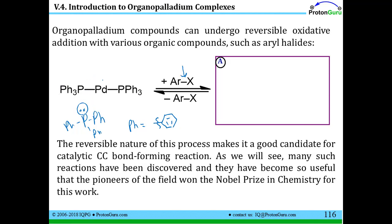Similarly to magnesium, the palladium is going to insert into the aryl-halogen bond, kind of like when you're making a Grignard reagent. The result is that the palladium has not only the neutral phosphine ligands but also an aryl and an X ligand. The aryl and the X are both considered negative-1 ligands, so the palladium which was zero oxidation state to start is now a plus-2 oxidation state.